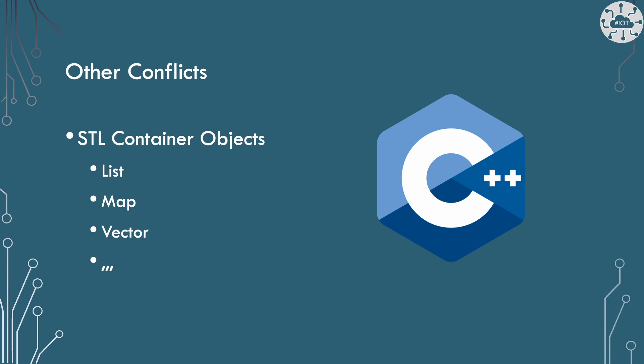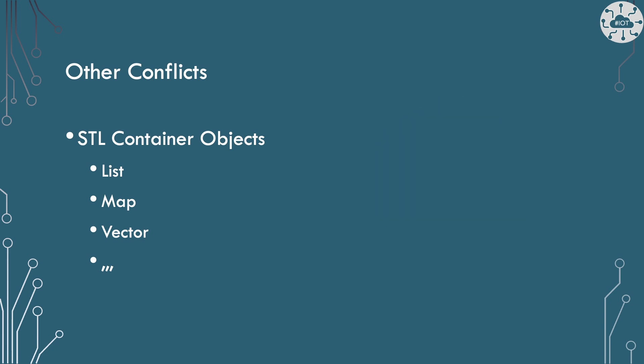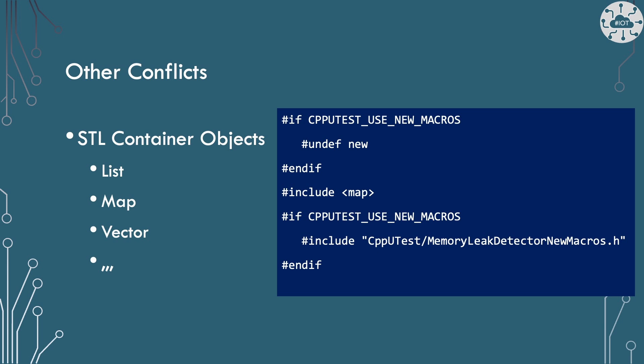There's another potential conflict as well. If you're using the standard STL library and any of the container structures — list, map, vector etc. — they all also redefine new and delete. The problem is that CppUTest actually overrides the definition of new and delete via a hash define, which is going to crash those STL library include files. There are several ways described to get over this problem on the CppUTest home page. What I've ended up doing in some of my projects is deliberately undefining new and then redefining it after I've included the STL container object library. That's a bit messy but it does work and it is clean. Perhaps I'll talk about that in more detail in a future video.